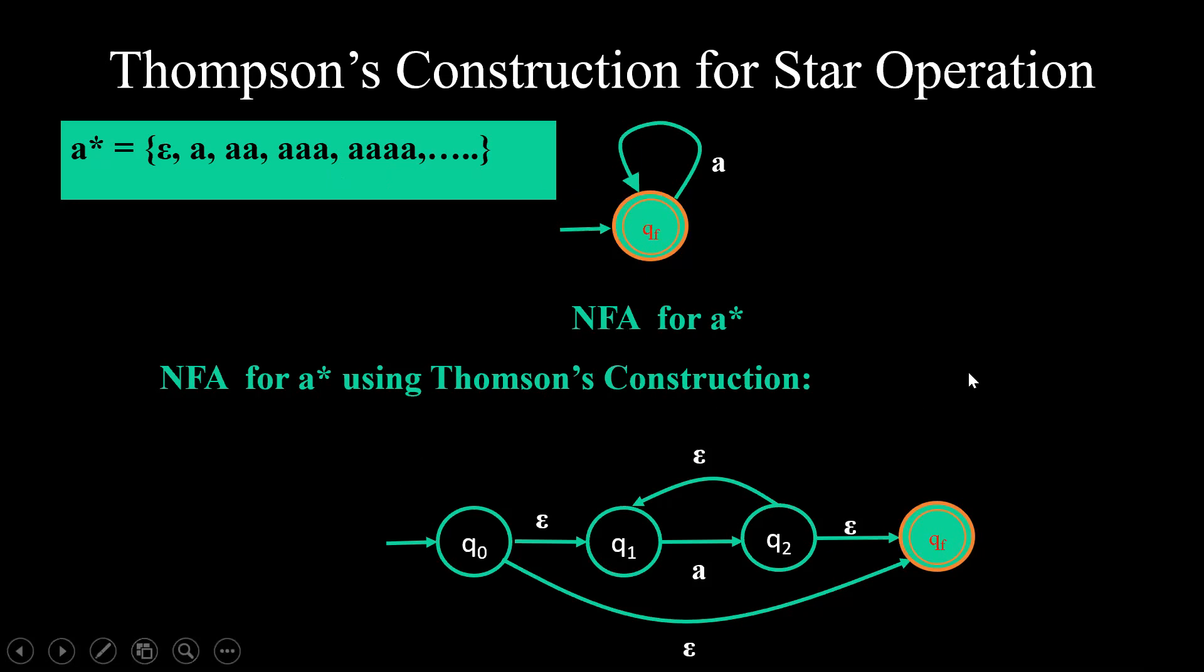If I go in for Thompson's construction for a*, I will have four epsilon moves. First epsilon move is from q0 to q1. Second epsilon move is from q0 to qf. Third epsilon move is from q2 to qf and fourth epsilon move is from q2 to q1. This is how we go in for Thompson's construction of star operation which you also say as Kleene closure.